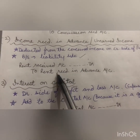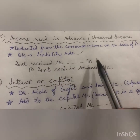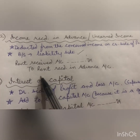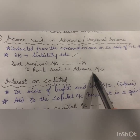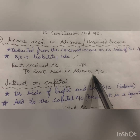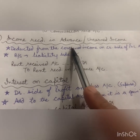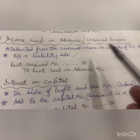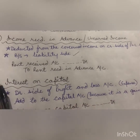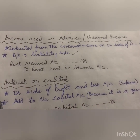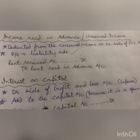The adjustment entry for income received in advance is: Rent Received Account debit, to Rent Received in Advance Account. The advance income we received will be deducted from the Rent Received account, which is why Rent Received is debited.